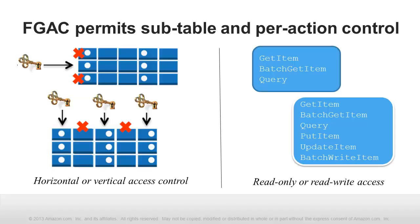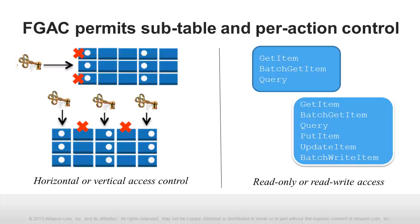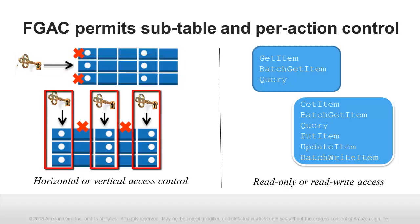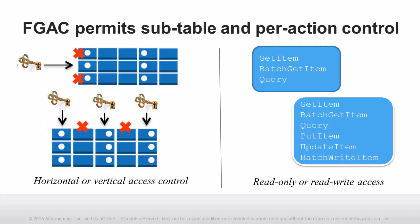Fine-grained access control allows you to define access permissions for particular end users against particular items — that is, rows — of DynamoDB databases. You can also define permissions for users against particular attributes, that is, fields across all items. These permissions specify which API actions the authorized users can perform against the data. For example, it is easy to implement read-write and read-only access, and you could even choose to permit only specific actions.